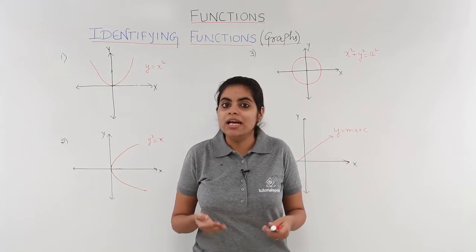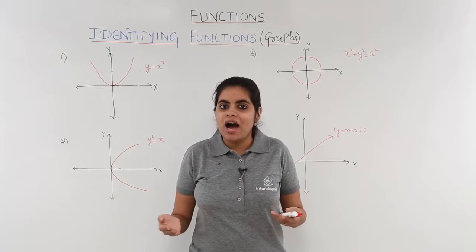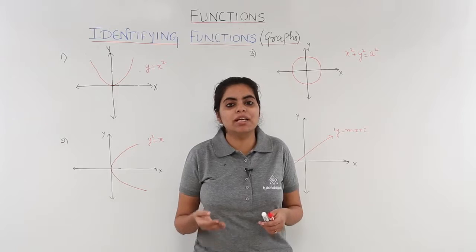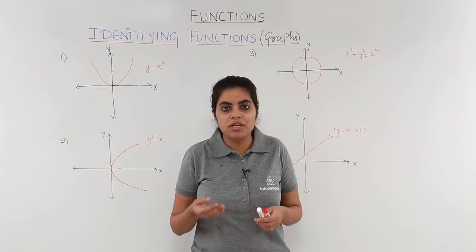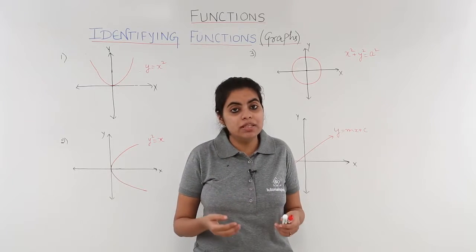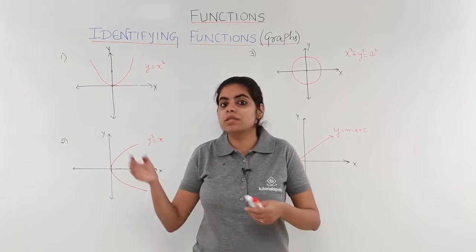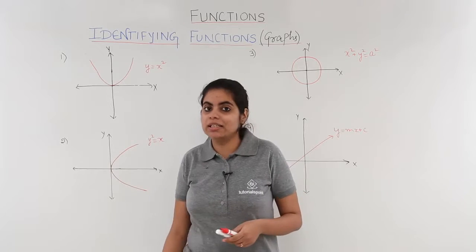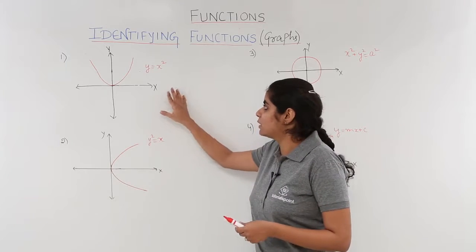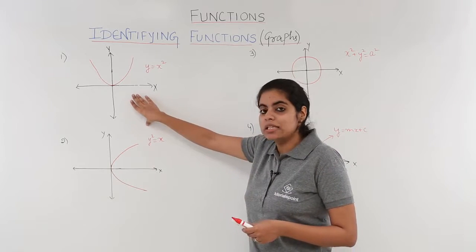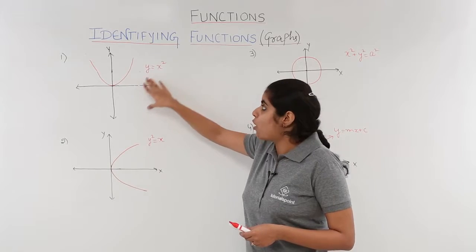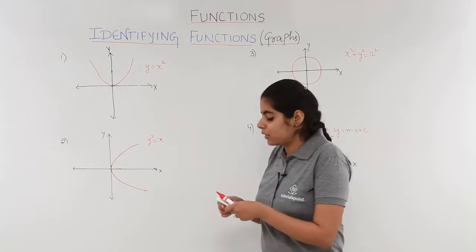Now let's see how to identify whether a given schematic graph is a function or not with the help of some concept. Let's get started with the four examples that we have been given here. This is the first graph of y equals x squared.